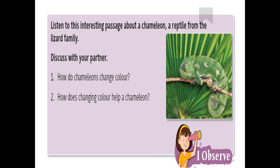So here we are getting general information about chameleons. Question one: how do chameleons change color? The chameleons can bring some structural changes to the upper layer cells of their body to camouflage — which is the process to change the color of their skin. Question two: how does changing color help a chameleon? Changing color helps the chameleon to get itself mixed into the color of its surroundings so that it cannot be noticed by the predator.